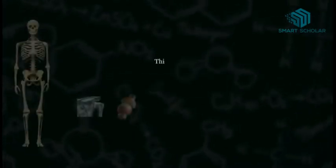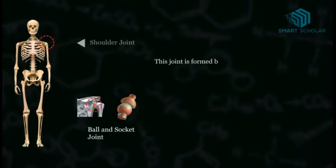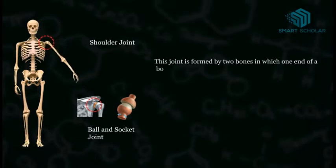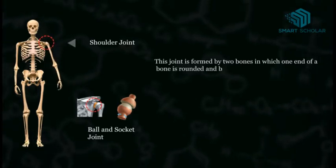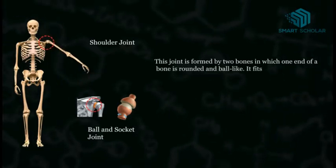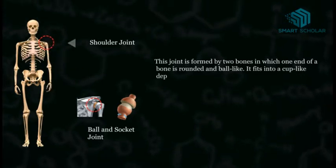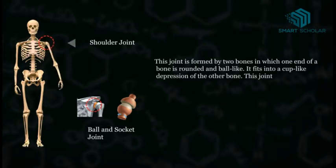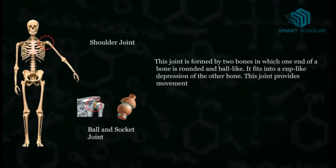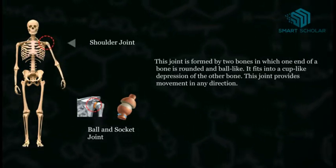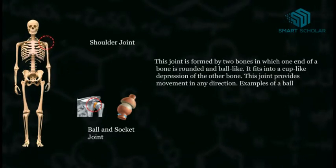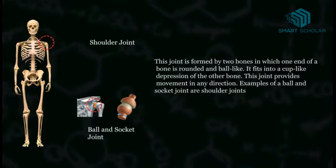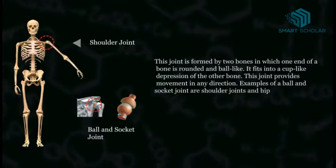The ball and socket joint is formed by two bones in which one end of a bone is rounded and ball-like, and fits into a cup-like depression of the other bone. This joint provides movement in any direction. Examples of a ball and socket joint are the shoulder joint and hip joint.